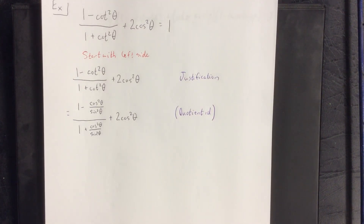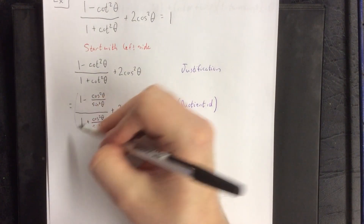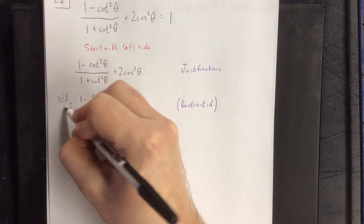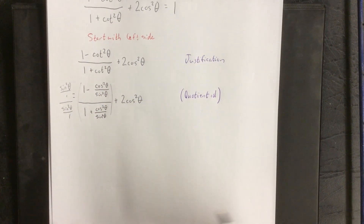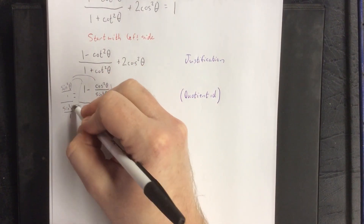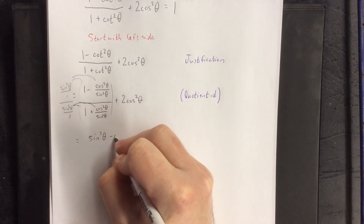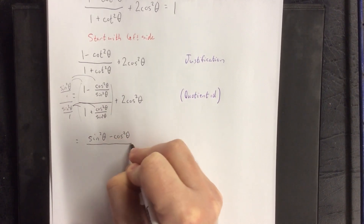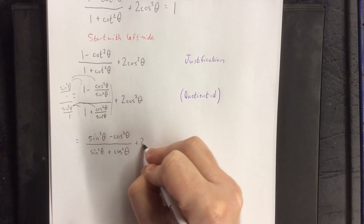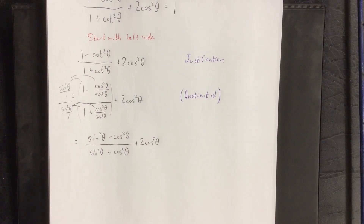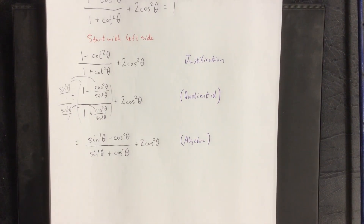Similar to the last problem, I now have fractions inside of a fraction. So I'm going to multiply the top and bottom of this big fraction by sine squared of theta over 1. I'll distribute that through to both terms in the numerator and both terms in the denominator. The first term in the numerator becomes sine squared of theta minus cosine squared of theta, and the denominator becomes sine squared of theta plus cosine squared of theta. That was a step of algebra using the distributive property and reducing fractions.